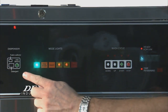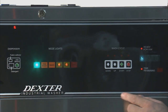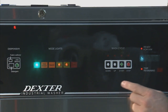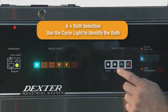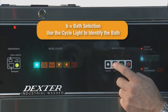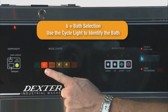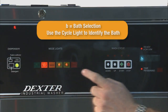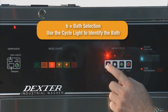The add bleach light will continue to blink during the programming mode. The second step is the bath selection. B for bath will be displayed and the flush light will be illuminated. To change the bath being programmed, press the up button. The cycle light on the display will indicate the bath selections.